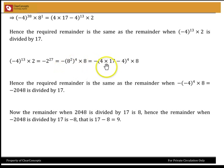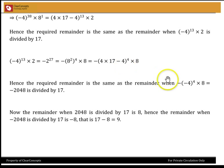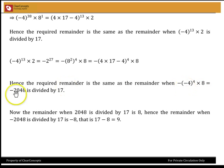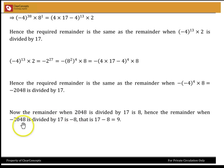The last term is minus 4 to the power 4, with a minus sign in front and 8 outside. So minus of minus 4 to the power 4 times 8 is straightforwardly 2 to the power 11, which is 2048. So we want the remainder when minus 2048 is divided by 17. When 2048 is divided by 17, the remainder is 8. So when minus 2048 is divided by 17, the remainder would be minus 8. Since we can't have a negative remainder, the actual remainder is 17 minus 8, which is 9 — the same answer as before.